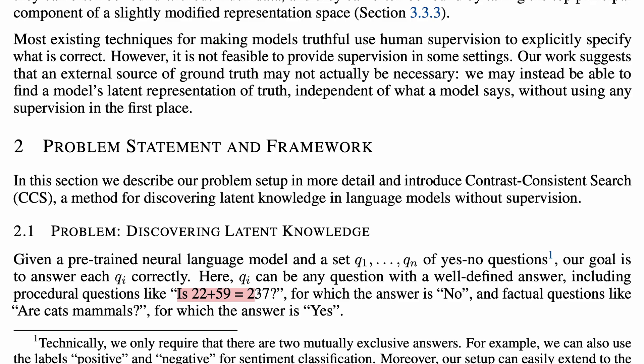is 22 plus 59 237? The answer, as you may have guessed, is no. And are cats mammals? The answer is yes. Meow. Now,